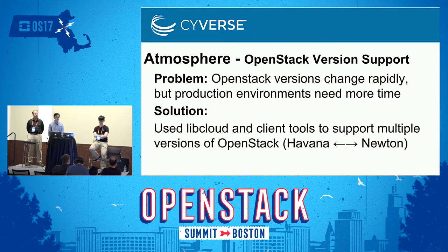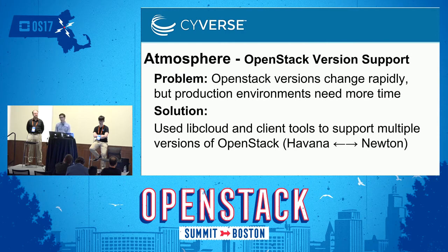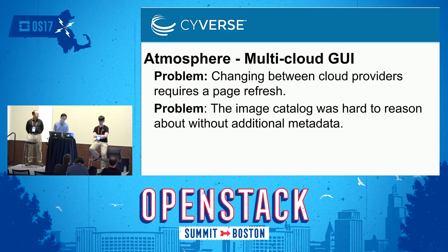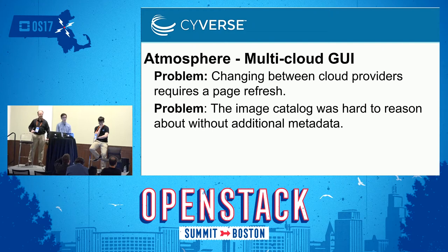The next problem we encountered is that the rapid development of OpenStack meant a new release every six months, but our production systems were not quite as agile. We needed to maintain compatibility for the production systems and ensure that the latest and greatest version of OpenStack could all be supported by Atmosphere. So we created an abstraction library that relied on LibCloud and the OpenStack client tools, which enabled Atmosphere to manage OpenStack versions from Havana to Newton.